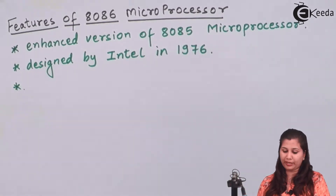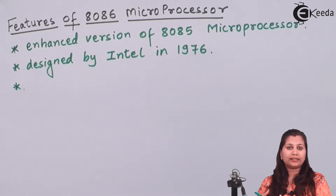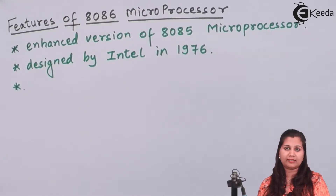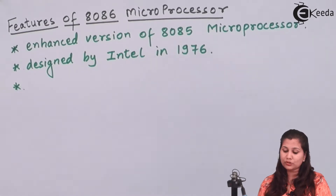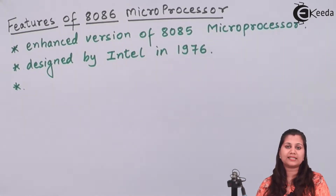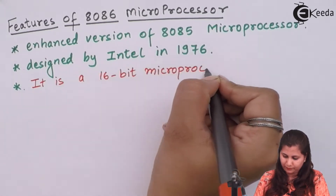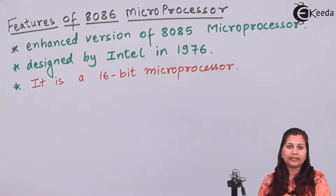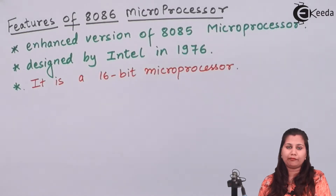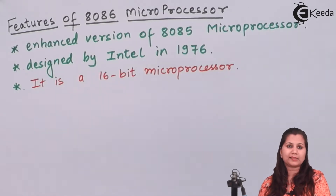The 8085 microprocessor was an 8-bit microprocessor. As the size of data increases, the microprocessor also has to increase its size. So the 8086 microprocessor is a 16-bit microprocessor, meaning it can handle data which is 16 bits wide, in the form of zeros and ones. It is also called a 16-bit microprocessor because its registers are also 16 bits.